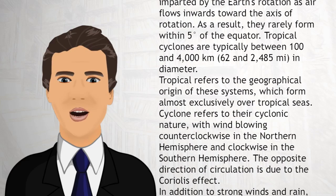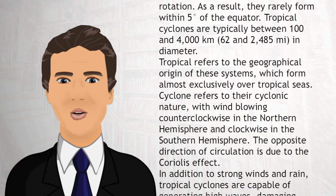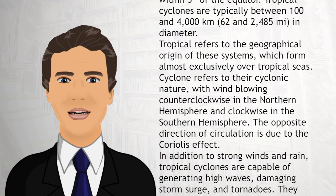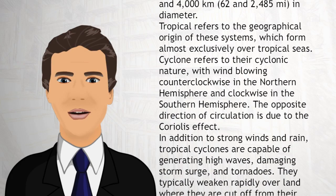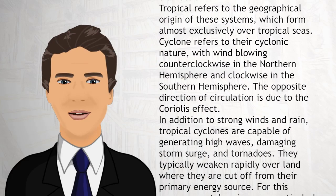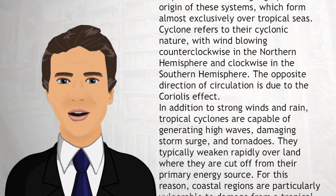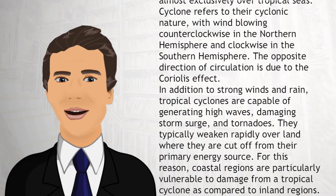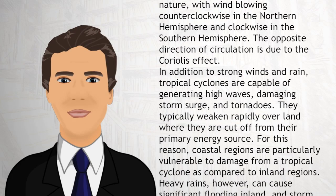Tropical refers to the geographical origin of these systems, which form almost exclusively over tropical seas. Cyclone refers to their cyclonic nature, with wind blowing counterclockwise in the northern hemisphere and clockwise in the southern hemisphere. The opposite direction of circulation is due to the Coriolis effect.